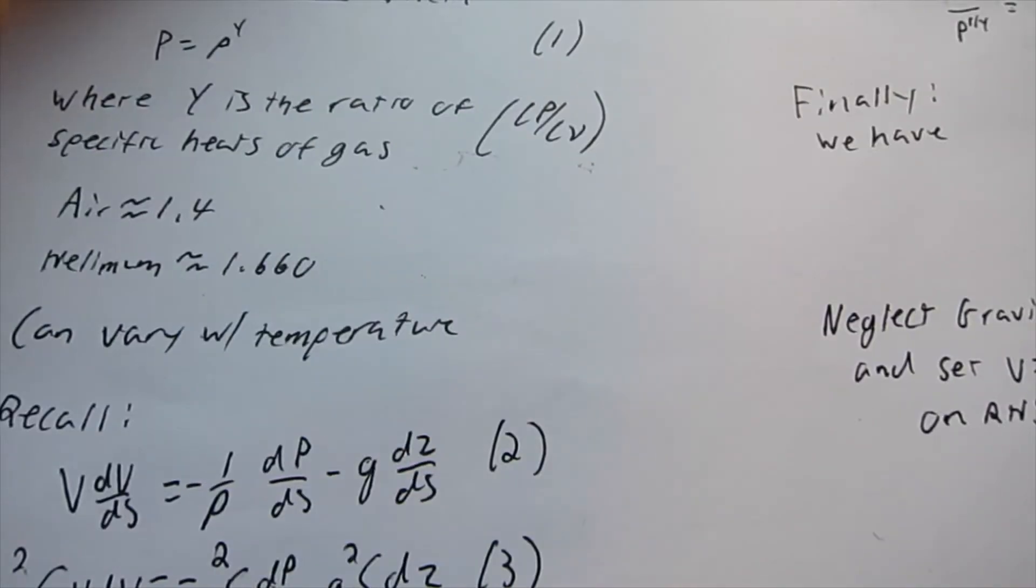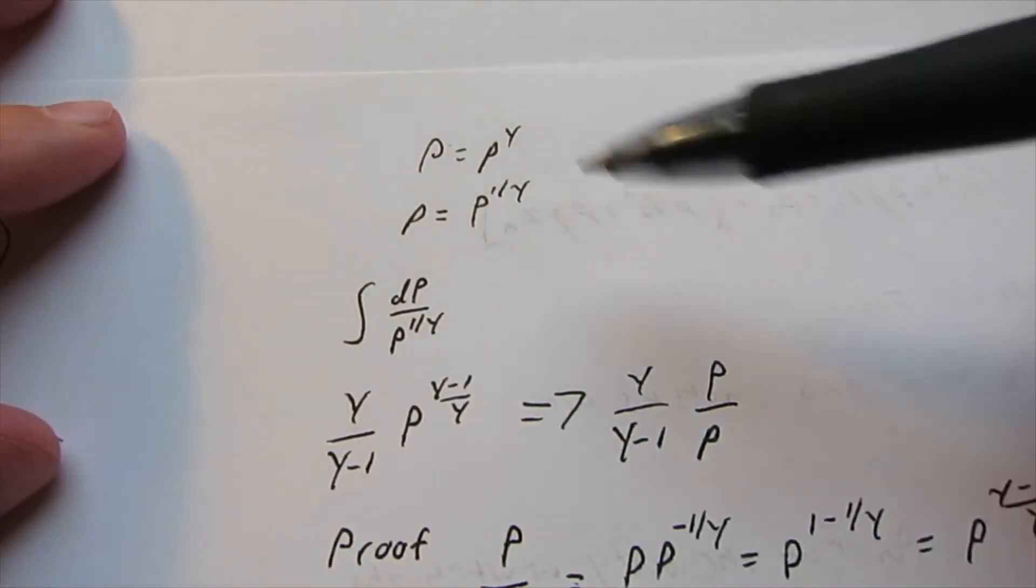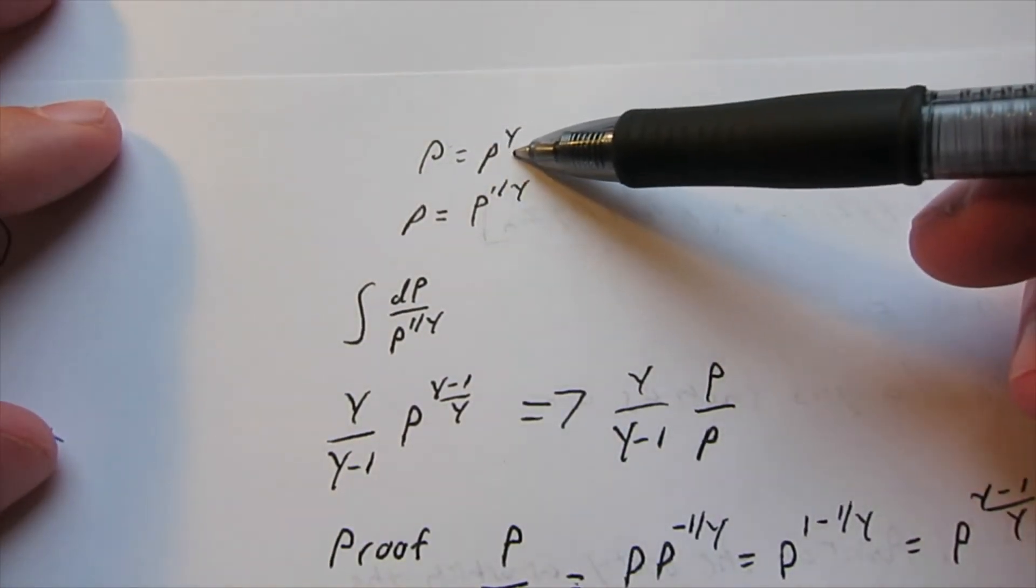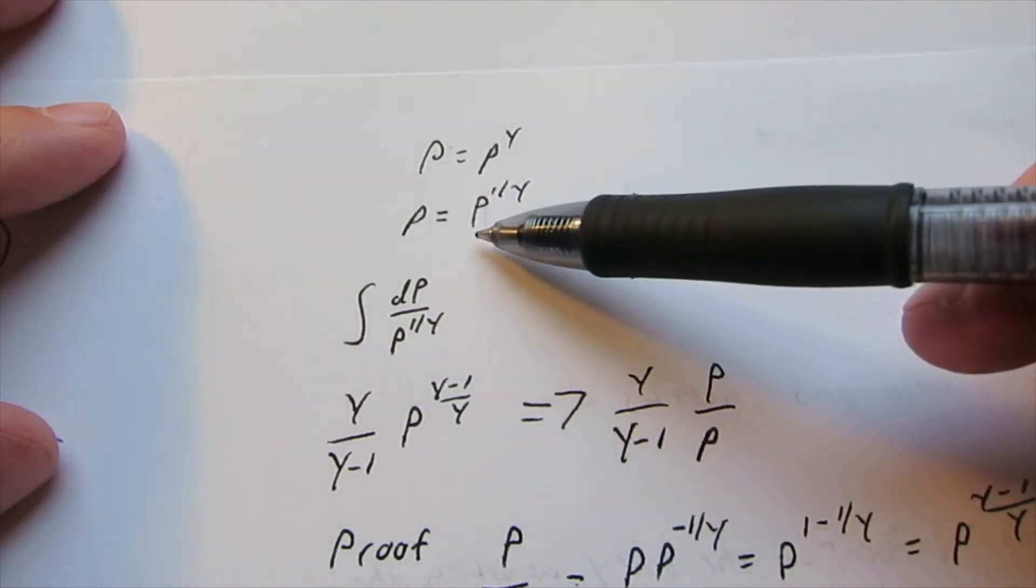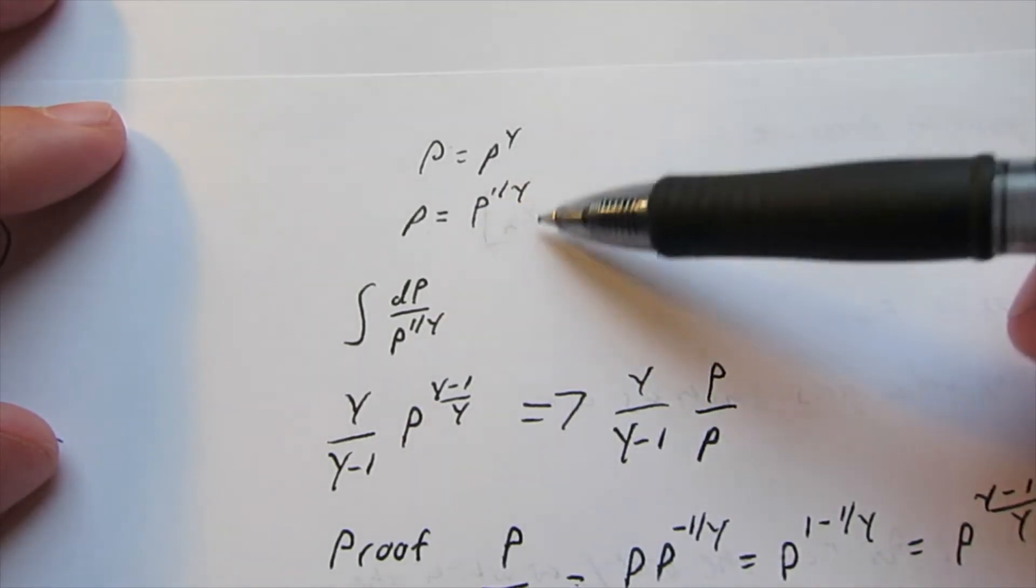So I did some math, and so we have the pressure again equals the density to this gamma value, so we can say density equals the pressure to the 1 over this gamma value.